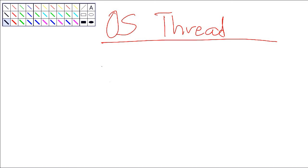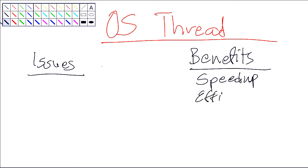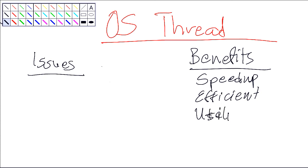Good morning. Today we'll be discussing operating system threads, and in particular issues that we face when we want to use threads. Of course there are many benefits if you want to use multiple threads or multiple processes — you get a lot of speedup, you can make things more efficient, you can utilize your resources properly, use more hardware. But before you get these benefits, there are many issues that do come up.